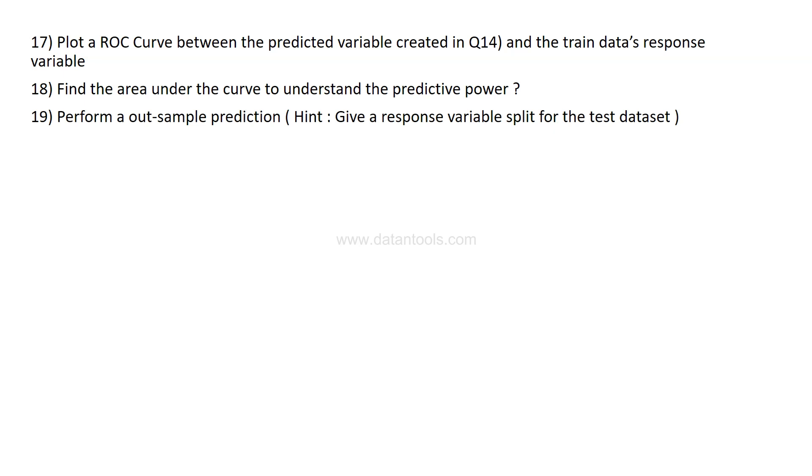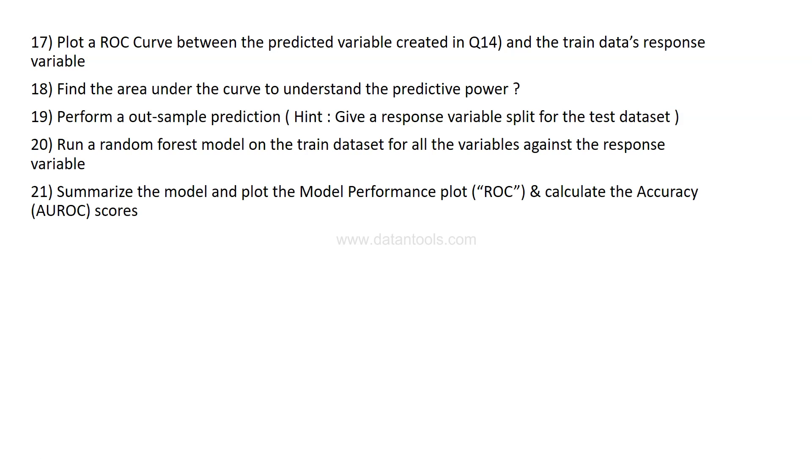Perform an out-sample prediction. Quick hint: give a response variable split for the test dataset. Run a random forest model on the train dataset for all the variables against the response variable. We've already run the logistic; now you need to run random forest. Summarize the model and plot the model performance plot. Plot the ROC and calculate the accuracy score, which is AUROC scores.